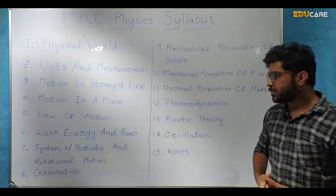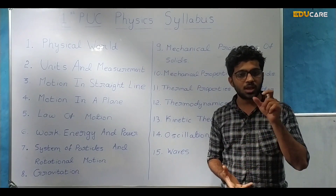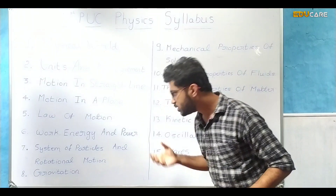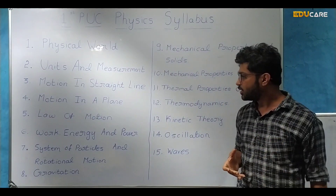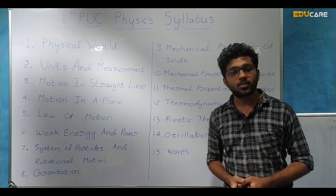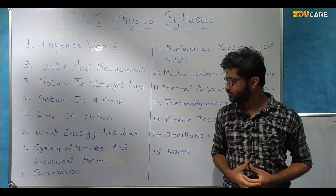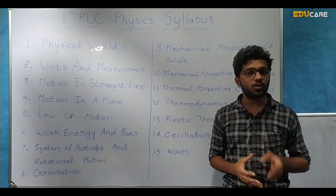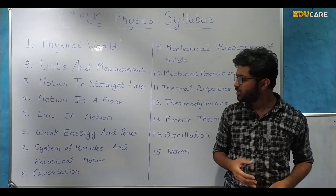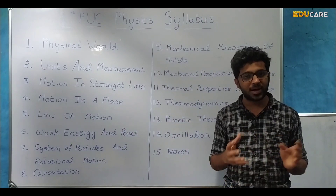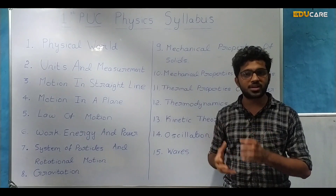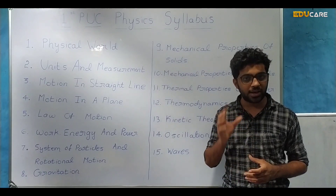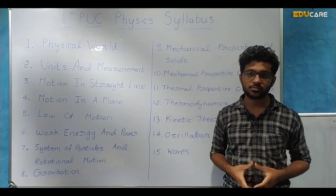The next chapter is Work, Energy and Power, which we studied briefly in 8th or 9th standard. Work is done on a body when a force acts on it and the body moves. We express work as the product of force and displacement, and the unit of work is joule. Energy is the capacity of doing work, and its unit is also joule. Power is the rate of doing work or rate of consumption of energy, and its unit is watt.